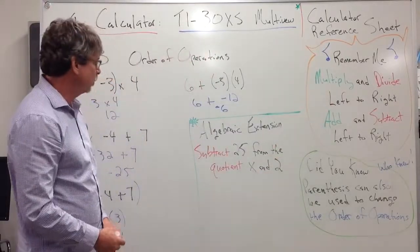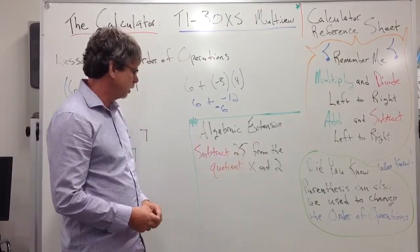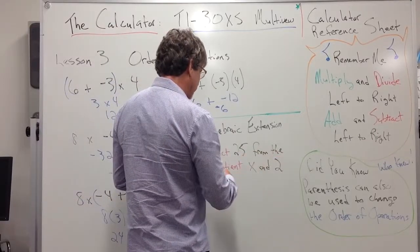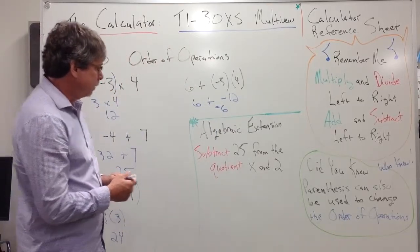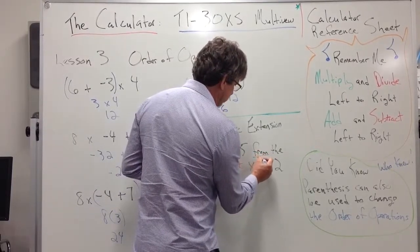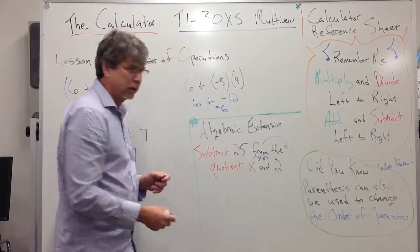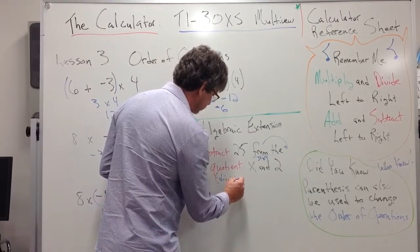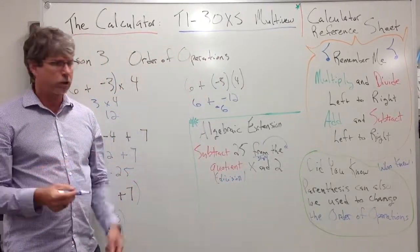One last example we want to look at is an algebraic extension. Subtract 25 from the quotient of X and 2. So subtract 25 from the quotient X and 2. And also again, we have this word from. From means we have to start. So we actually got to start with the quotient. Now, quotient is another word for division. So that's a vocabulary word. So if we're talking about a quotient, that's division.